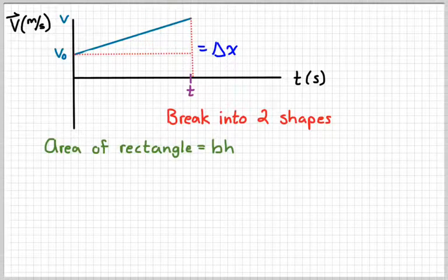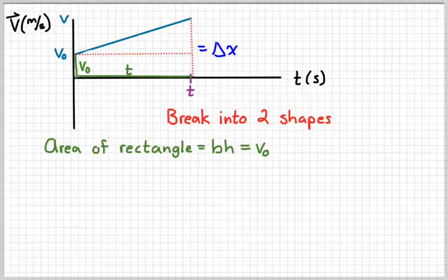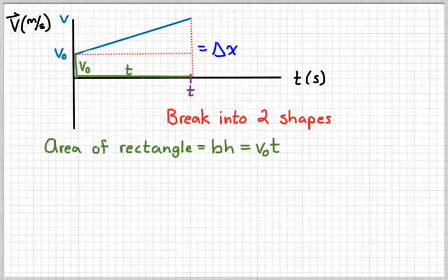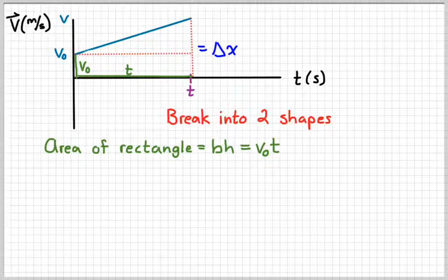Now, you guys should know the formula for the area of a rectangle, just base times height. Well, the height of that rectangle is V naught. And the base would be T. So, the area of that rectangle, in terms of our variables, would be V naught times T.